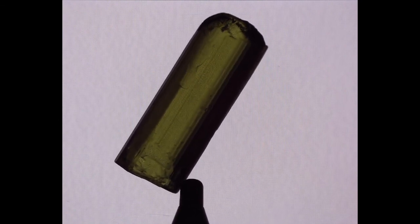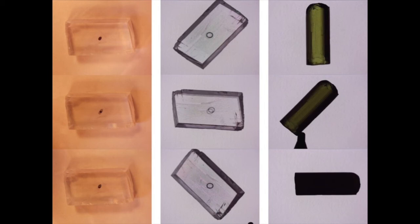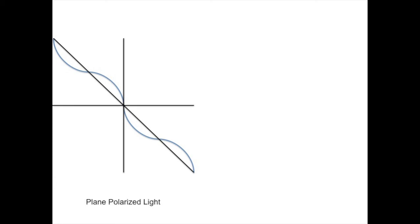As we rotate the tourmaline, the color gradually darkens until it is almost completely dark. Every 90 degrees the color goes from a maximum to a minimum — and recall that every 90 degrees when rotating the calcite we ended up with either the extraordinary or ordinary ray. That's not a coincidence. Plane polarized light vibrates in one plane. Anisotropic substances are defined by multiple indices of refraction; our tourmaline is described by two indices of refraction, which we can illustrate as two different directions.